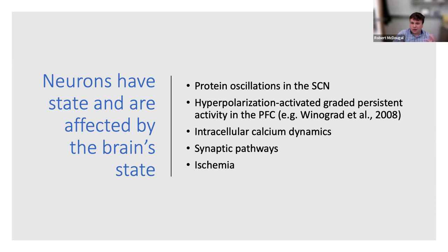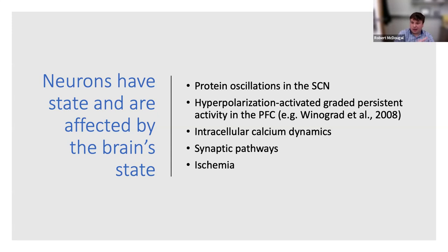The suprachiasmatic nucleus has about 50,000 neurons in the human, packed into a tiny volume of maybe 0.3 cubic millimeters. Firing rate varies rhythmically across 24 hours — these are protein oscillations driving changes in firing rates, so membrane potential changes over very long time scales. Individual cells are not so rhythmic on their own, so gap junctions help keep the system as a whole in sync. There's also evidence for hyperpolarization-activated persistent activity likely due to intracellular calcium dynamics.